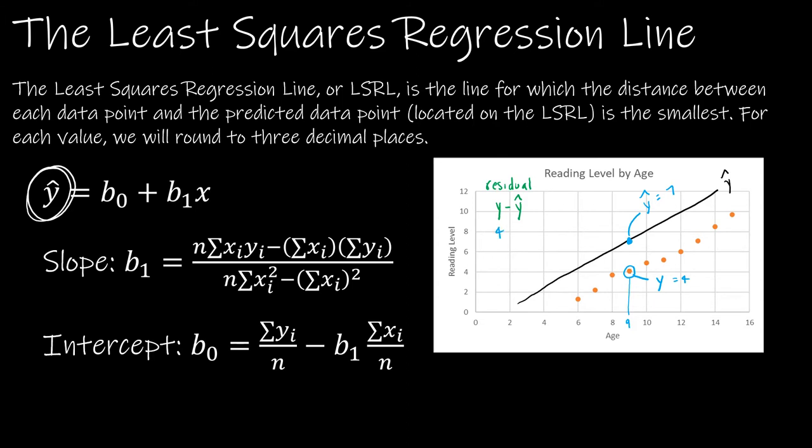So the residual for that individual point where x is 9 is y which is 4 minus y hat which is 7, so I have a residual of negative 3. What we're looking for in a least squared regression line is to minimize those residuals. So if I instead moved this line here, which doesn't hit all of the points because they're not in a completely straight line, it looks like now y hat might be something like 4.1. So now if y hat is 4.1 then I have 4 minus 4.1 which is negative 0.1 instead of negative 3.